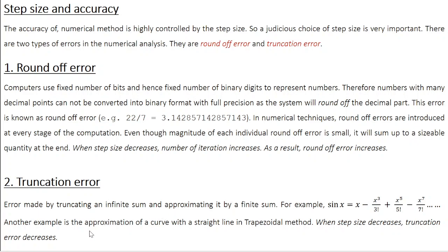The second type of error is known as truncation error. This is the error made by truncating an infinite sum and approximating it by a finite sum. For example, if you look at the Taylor series expansion for sin(x), this is an infinite series involving only the odd powers. Even though this is an infinite series, in a Python program you might take only the first 50 terms, basically terminating this infinite series at the 50th term. This kind of truncation results in an error known as truncation error.